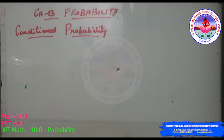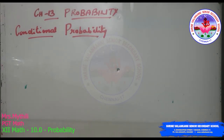Welcome children. Our next chapter is Chapter 13: Probability. In this chapter we shall discuss the important concept of conditional probability of an event given that another event has occurred, which is helpful in understanding Bayes' theorem.